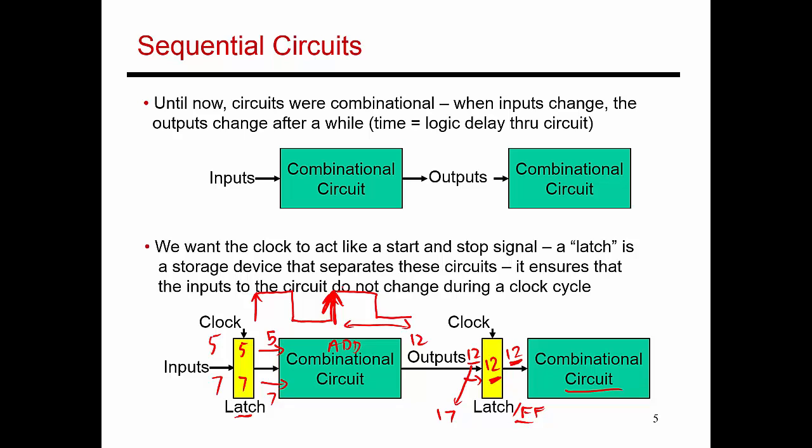So its inputs can change, but the value captured within the latch only changes at the next rising clock edge. And that's why even though the previous circuit is producing the new number 17, this circuit sees the input 12 for an entire clock cycle and does its math based on that. So that's the reason that we had these latches and these flip-flops.